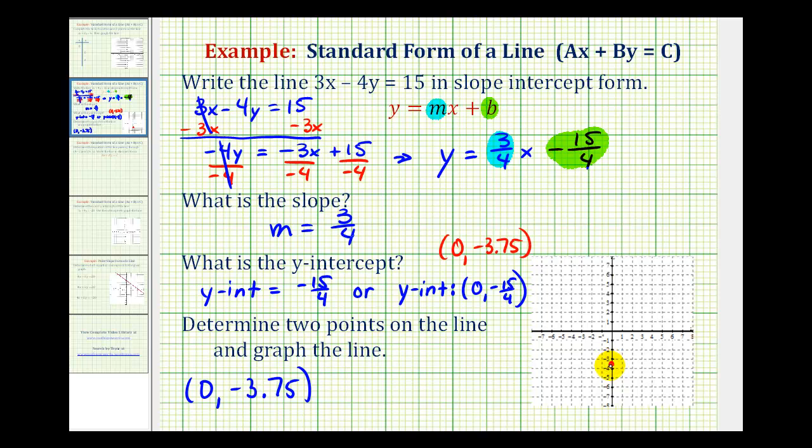And then from here, we could use the slope to determine additional points on this line. Since the slope is positive 3 fourths, from here, we would move up three units and right four units, somewhere in here.